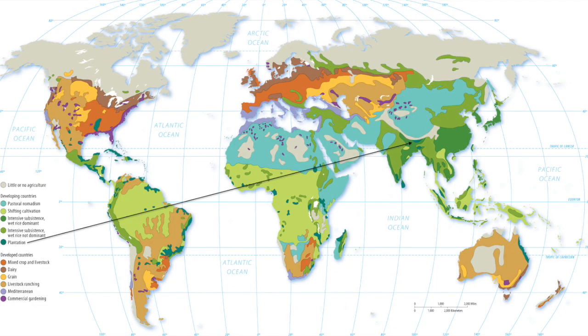When we look at a map of the earth, it is the dark green areas that we see — again, usually in tropical areas.